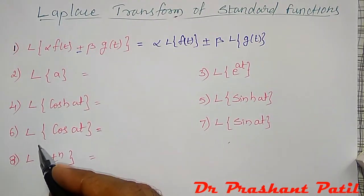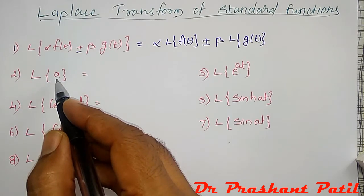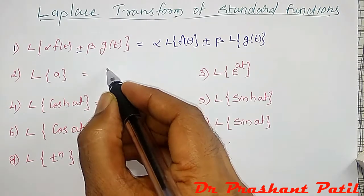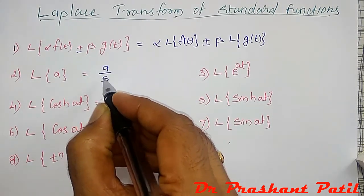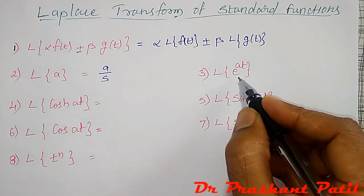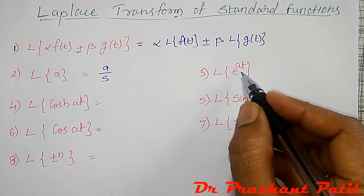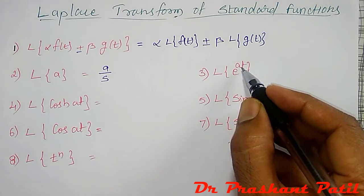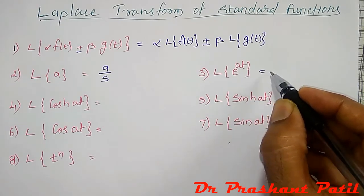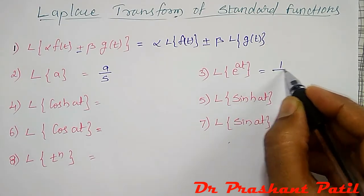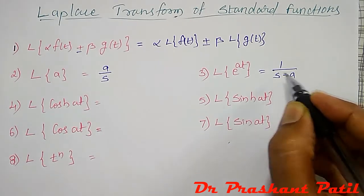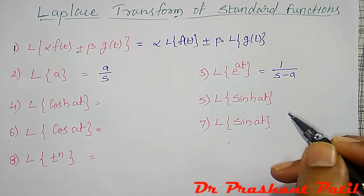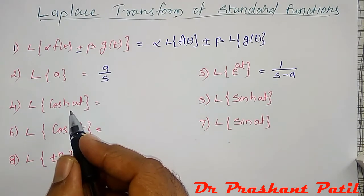The Laplace transform of a constant, independent of t, is given by a divided by s. The Laplace transform of e to the power at — an exponential function where the power is in the form at — is given by 1 divided by (s minus a), where a is the coefficient of t. Similarly, the Laplace transform of cosh(at) is s divided by (s squared minus a squared).